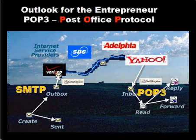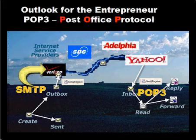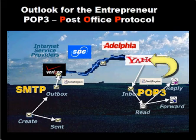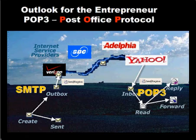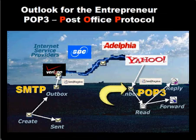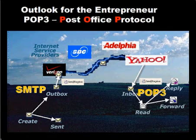Then that Verizon post office sends it electronically over to the recipient's post office — for example, Yahoo, or Adelphia, or SBC, or any of the myriad of others. When the recipient hits their send/receive, Yahoo sends it down to their inbox and then removes it from Yahoo. Very similar to traditional mailbox protocol.